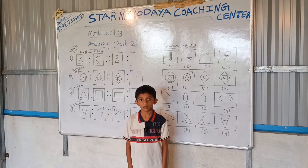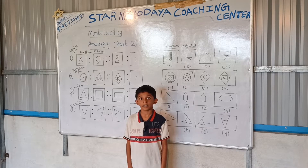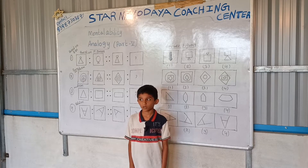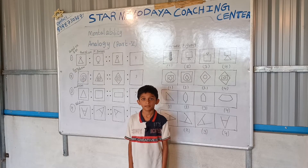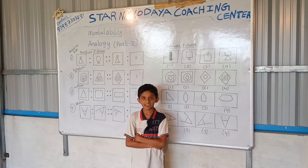One Digit Greatest Number. Two Digit Smallest Number. Three Digit Greatest Number. Four Digit Smallest Number. Five Digit Greatest Number. Two Digit Greatest Number.